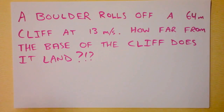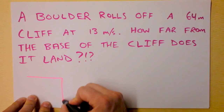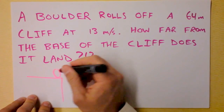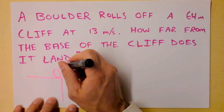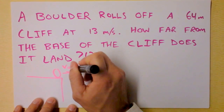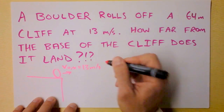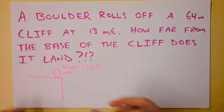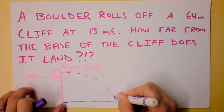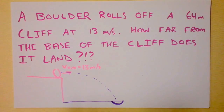How far from the base of the cliff does the boulder land? Let's draw a picture. It is a Class 1 problem because the boulder is going horizontally off the cliff. It has an initial velocity in the x direction of 13 meters per second. What we're trying to find is how far the boulder travels horizontally — it makes a beautiful parabola. Where is the impact point going to be from the base?